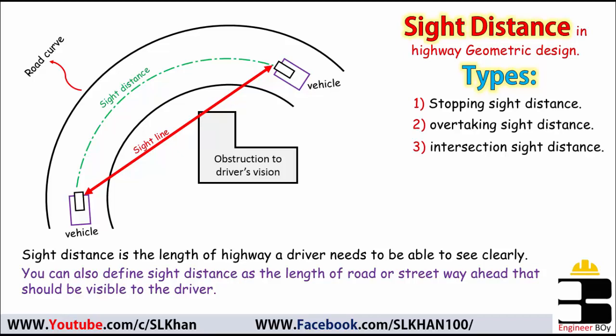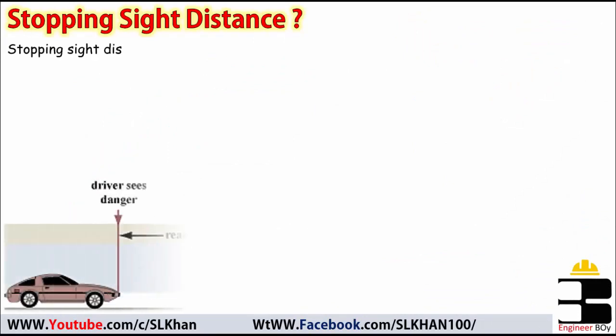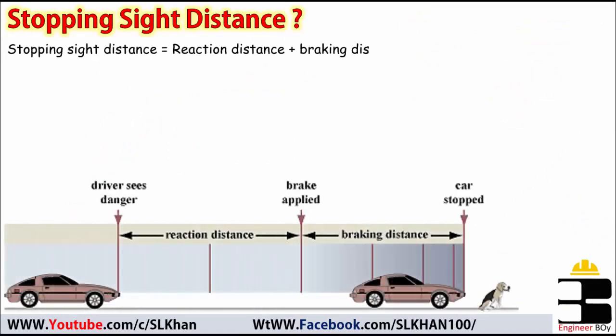I'll try to bring a separate video on each type and this time let's talk about the first one, that's the stopping sight distance. So what's stopping sight distance? Stopping sight distance is actually the sum of reaction and braking distance. You can also write this in the parametric form like D equals D1 plus D2, where D is stopping sight distance, D1 is reaction sight distance and D2 is braking distance.